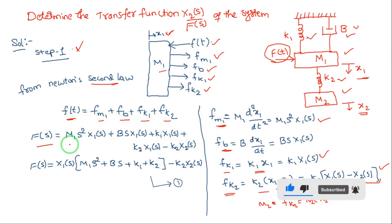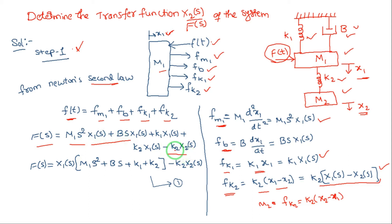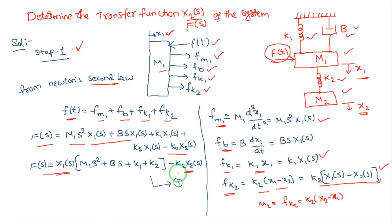Substituting all force equations into Newton's second law for m1: F(s) = m1*s²*X1(s) + b*s*X1(s) + k1*X1(s) + k2*(X1(s) - X2(s)). Taking X1(s) as the common term gives the grouped expression. The X2(s) coefficient yields a single term: k2 * X2(s). This is Equation 1.